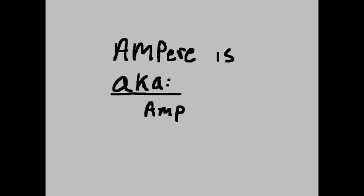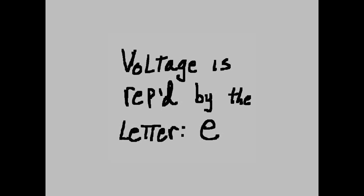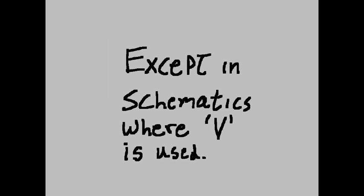The unit of measure for current is Ampere. Ampere is also known as Amp. Voltage is represented by the letter E, except in schematics where V is used.